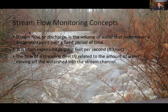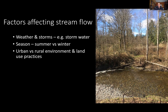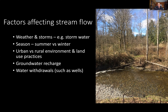A number of factors can affect flow. One is weather and storms — a storm in an urban area creates a lot of stormwater. Seasonally, we get much more rain in winter than summer. In an urban environment, water tends to run off more quickly into and through the creek, whereas in a rural or natural environment it runs off more slowly, recharging groundwater and dropping stream levels more gradually. Other factors include water withdrawals like wells.